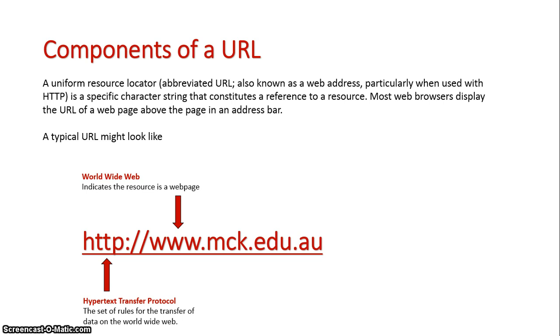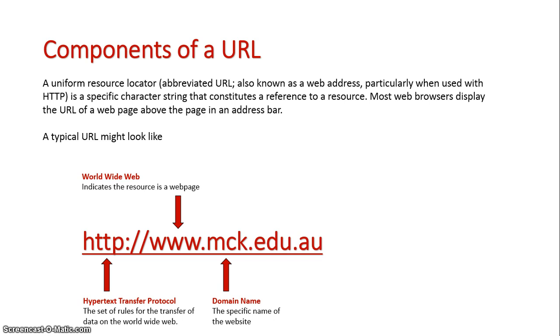The next part is the WWW, which stands for World Wide Web. This indicates that the resource is a web page. We have the domain name next, which is different for every website on the internet and is the specific web address for that internet site.